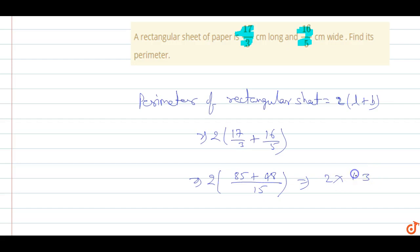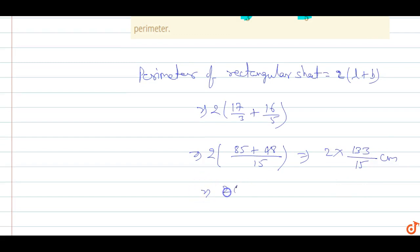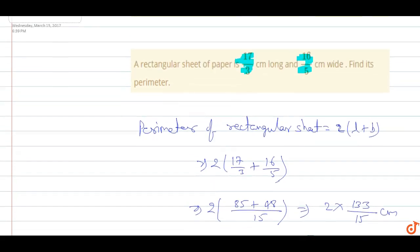Or we can say that this comes out to be 266 by 15 cm, which is equal to 17.73 cm. The rectangular sheet perimeter is 17.73 cm. So this is the answer for this question.